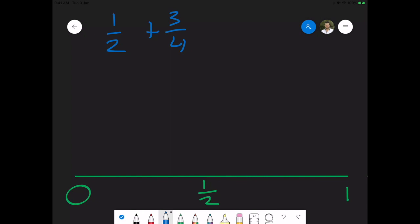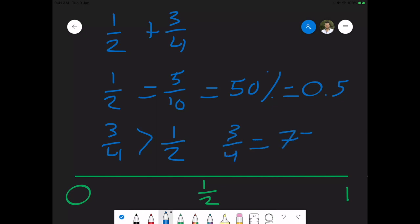Let's think about this expression. Let's see each fraction separately. I have a half, which could be 5 out of 10, right? Which means it could be 50% of something, also 0.5 of something. I also know that 3 quarters is more than a half, as a half is 2 out of 4. Therefore, 3 quarters is way bigger than a half. And 3 quarters is the same as 75% of something.